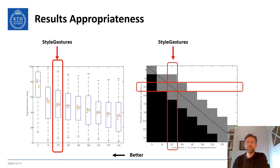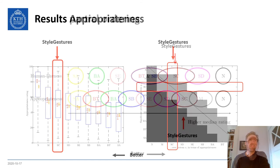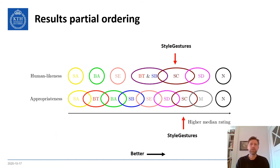The second study involved both gesture and speech. Here, the participants could hear the speaker and they were asked to rate how appropriate the gestures are to the speech. The results show that style gestures ranked number one among the submitted systems and again was only significantly worse than the natural recording. Here is an ordering diagram that shows ranking and significance among the systems. Overlapping ellipses means no significance.